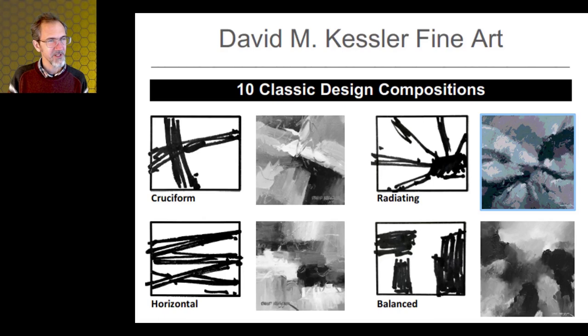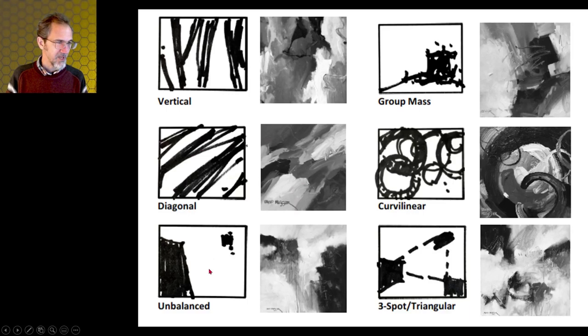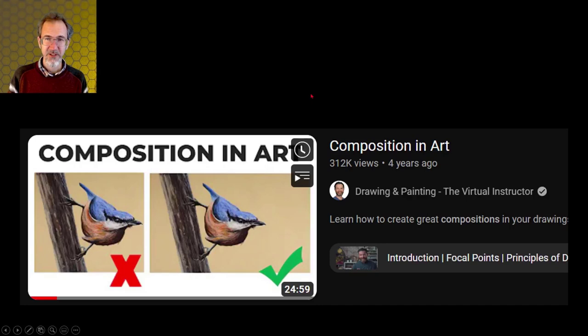I want to highlight this guy David Kessler Fine Art. He's got a YouTube channel that I will link to. But he's got classic design compositions that he's either come up with or just simplified. Cruciform. Radiating. So obviously my radiant is using the radiating form. Horizontal lines. He's got vertical lines. Diagonal lines. There's balance and unbalanced. And then group mass. Curvilinear which is just circles. And then a three spot triangle. So you might take a look at this. See if it's helpful. Another video I'm going to point you to is this composition and art. He's going to talk about a lot of the things I've talked about. But I think it's going to be helpful for you to hear somebody else talk about these things and to see more examples.